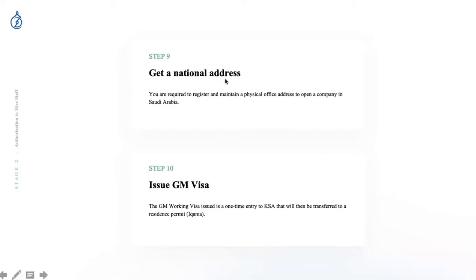If you already have an office, we can register you at those premises instead. One issue to be aware of: landlords may require a Saudi bank account or GM in place before granting a national address, but you need the national address to open the bank account — creating a catch-22 situation. This is something we navigate early in the setup process.